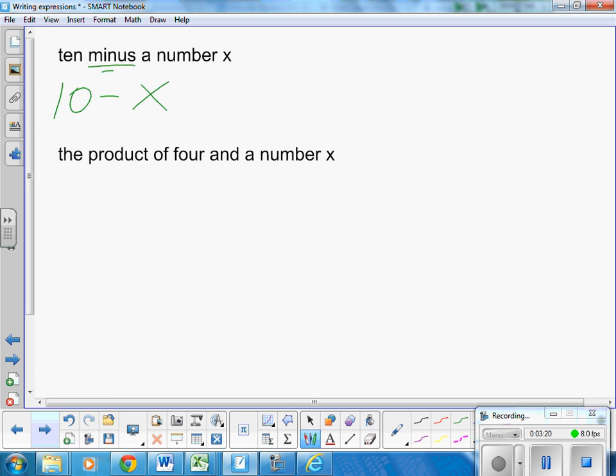The product. Oh, boy. Product. Now, I don't cover all of the different terms. Okay? But product means multiply. Okay? So it's the product of 4 and the number x. That just means 4x. It's the product of multiplying 4 times x.